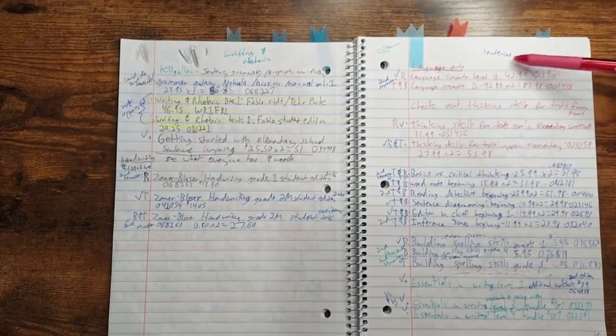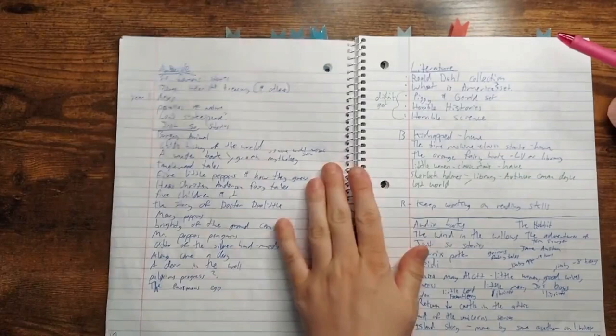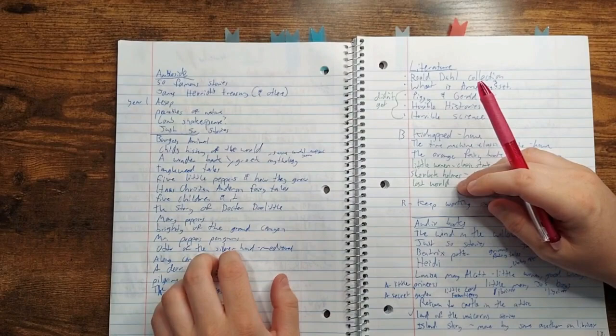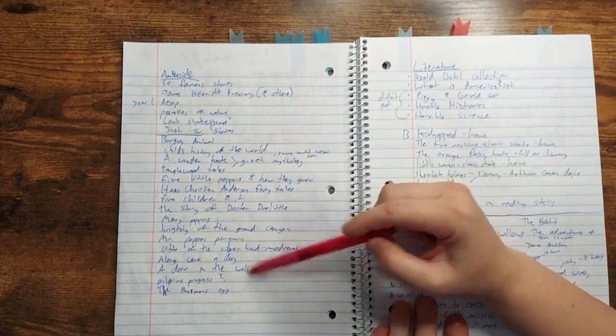Language Arts, we've got Language Smarts. This is from the Critical Thinking Company again, Thinking Skills, Reading Detective, things like that. Essentials in Writing, which is a writing program. And then Ambleside. So Ambleside Online is a Charlotte Mason curriculum. It's free. They have book lists and things like that. So you have to buy the books yourself, but they also have links to all the places you can get it for free. So I just have ones on here that I'm going to try and incorporate either into read-alouds or audiobooks.